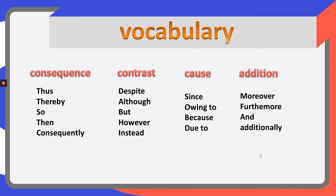We have words of consequence, linking words of contrast, cause, and addition. Now, what is a linking word? It's a word that links two sentences. You know how to make a sentence — if you don't, watch the videos about word order and verb tenses. Then you're going to see the videos about connectors. What is a connector? It's a word that links two sentences to create a bridge.